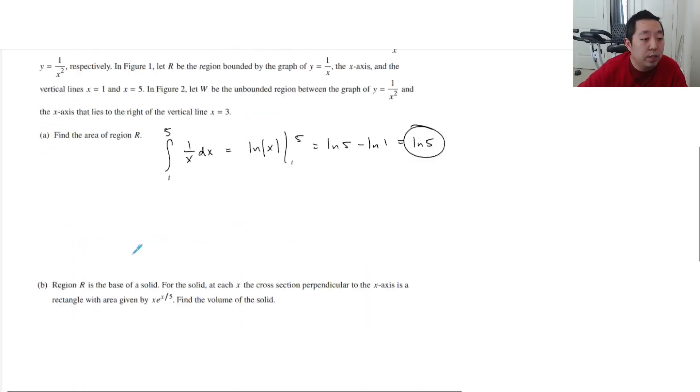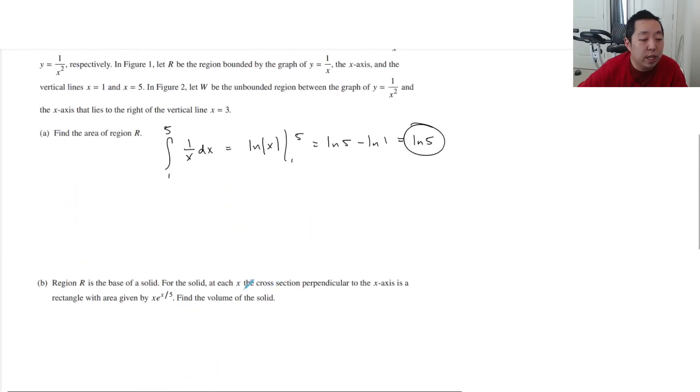Part B: Let R be the base of a solid. For each x, the cross-section perpendicular to the x-axis is a rectangle with given area. When you integrate area or volume, you're always doing the area times the thickness. The area could be volume like disk or washer method, it could be shell method - it varies. But here they give you the area: x e^(x/5) dx, and you're integrating from 1 to 5.